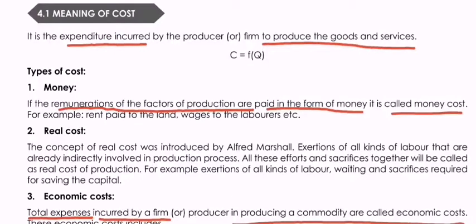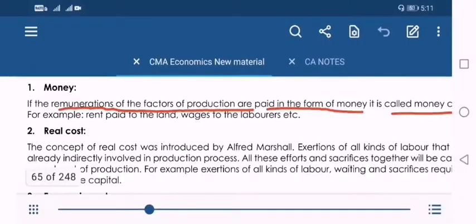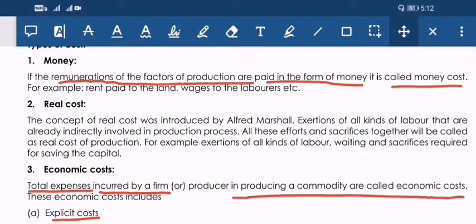The first type is Money Cost. Money is not a cost itself, but whenever you incur any expenditure you are giving money to meet that expenditure. So in economics, money is sometimes used as a cost. If the remuneration of factors of production — rent, interest, wages, and profit — are paid in the form of money, it is called money cost. For example, rent paid to land and wages to laborers are paid in money, so these are money costs.